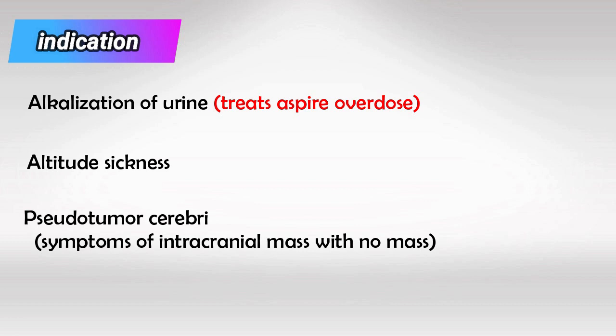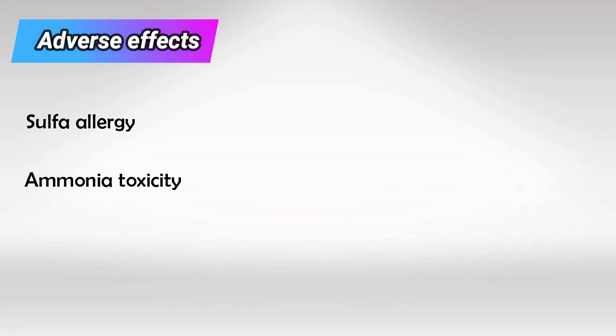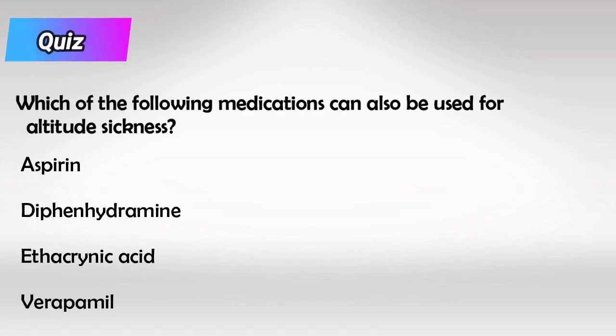If medical therapy with acetazolamide doesn't work, we can go for surgery, and the procedure is called optic nerve fenestration. It's also used for glaucoma. As for side effects, it causes sulfa allergy like many diuretics, and it also causes ammonia toxicity and metabolic acidosis.